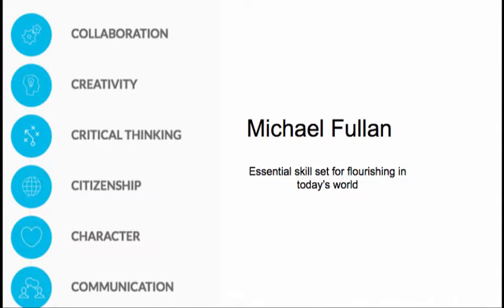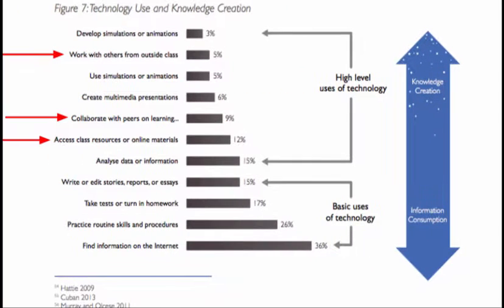Michael Fullan's work around new pedagogies for deep learning has also identified six C's, which are the essential skill set that every student needs to achieve and excel in deep learning. His deep learning definition is: comprehensive learning that includes a range of skills and attributes related to human flourishing. They are: collaboration, creativity, critical thinking, citizenship, character development, and communication. This diagram is from Fullan and Langworthy's book, A Rich Seam: How New Pedagogies Find Deep Learning, on page 31.